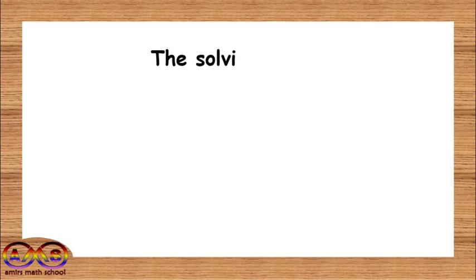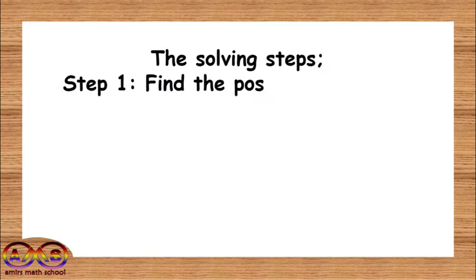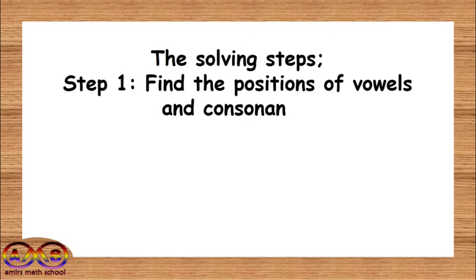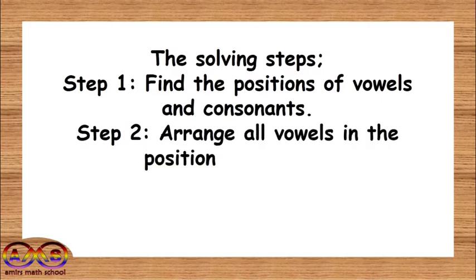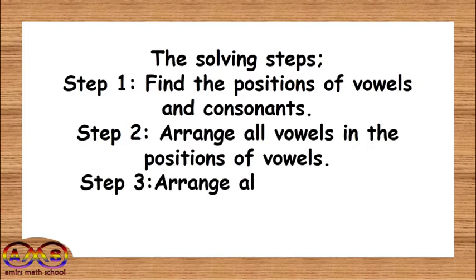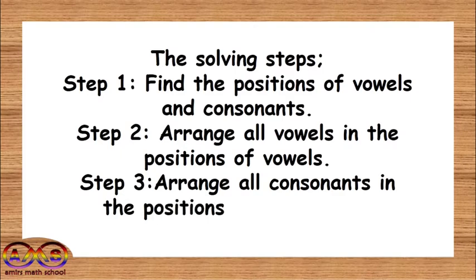The problem-solving steps: Step one, find the positions of the vowels and the consonants. Step two, arrange all the vowels in the positions of vowels. Step three, arrange all the consonants in the positions of consonants. The result will be the multiplication of the permutation value from step two and the permutation value from step three.